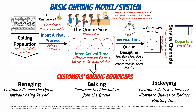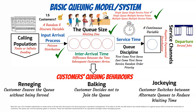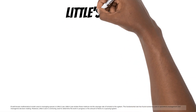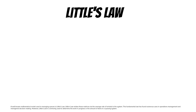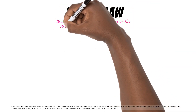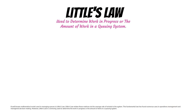Now let's use simple mathematics to make sense of all we have discussed about queuing in operations management. To do this, we will use certain features of a typical queue: the arrival time of customers, the queue size, and the queuing system or structure. These are important measurements for operations managers when managing queues. A well-known mathematical model used in managing queues is Little's Law. Little's Law relates these metrics via the average rate of arrivals to the system and is commonly used to determine work in progress or the amount of items in a queuing system.